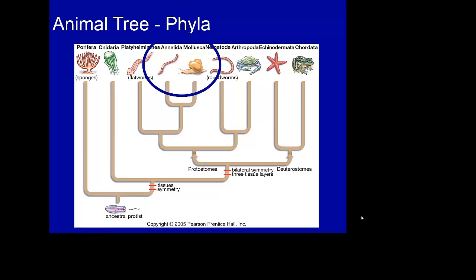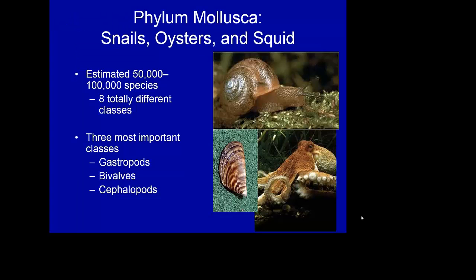Now that you have an understanding of earthworms and what segmentation means, I want to talk about a sister group to them and look at the mollusks. When we look at mollusks, you may know many of these as squid and snails and oysters and so on, but there are actually eight totally different classes of mollusks.